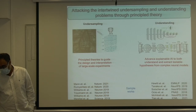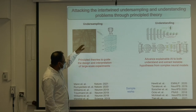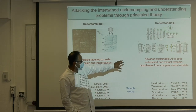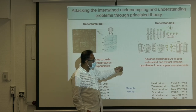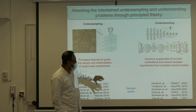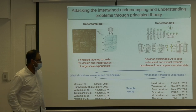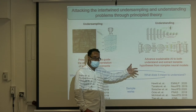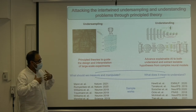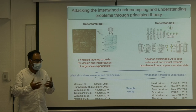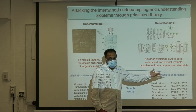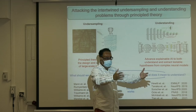The kinds of things we've been working on are trying to attack both the undersampling and the understanding problem — trying to develop principled theories to guide the design and interpretation of large-scale experiments, and also trying to advance what's called explainable artificial intelligence to both understand and extract testable hypotheses from complex neural models. These are completely interrelated, because for both neuroscience and AI to make progress, we really have to confront what it means for a human to understand how a complex nonlinear high-dimensional circuit computes. We don't actually know how to answer that question — it's going to be unfolding over several years or decades.